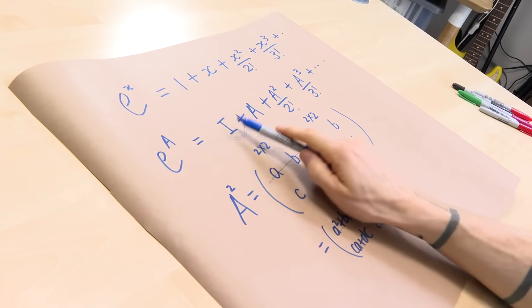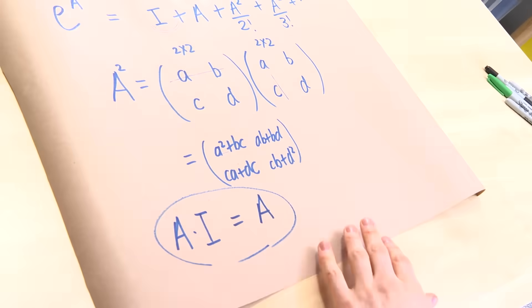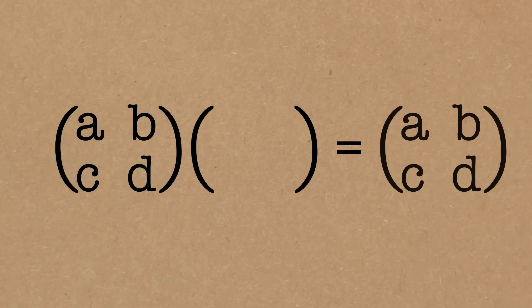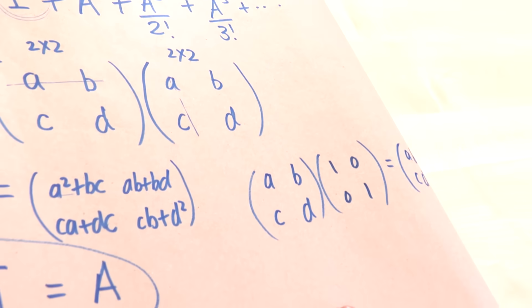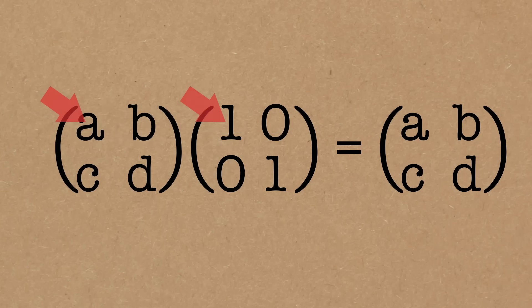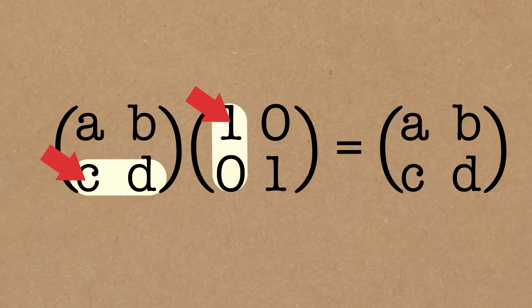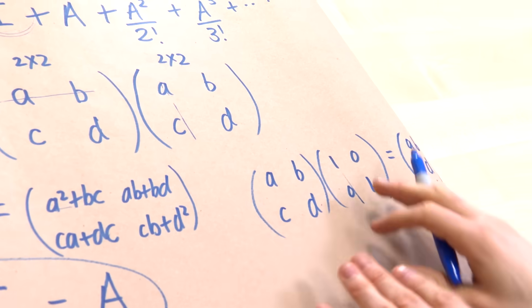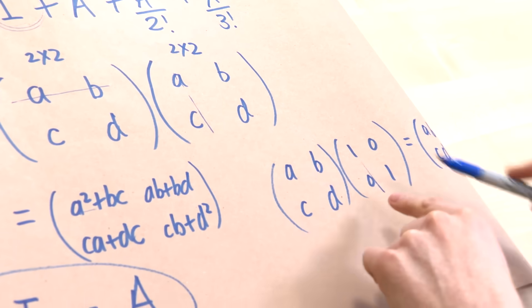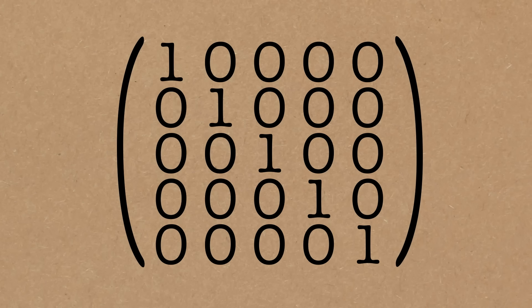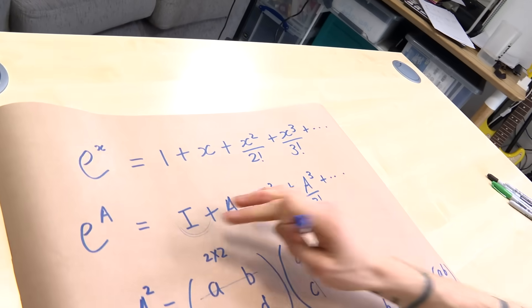I mentioned the identity matrix, which plays the role of one. When I have a matrix A and multiply it by an identity matrix, I want to get back A. So A, B, C, D multiplied by something gives me A, B, C, D. That something is our identity matrix: first row, first column is A times one plus B times zero, so just A; and the other entries follow similarly. So the identity matrix — ones down the diagonal, zeros everywhere else — plays the role of one in our formula.